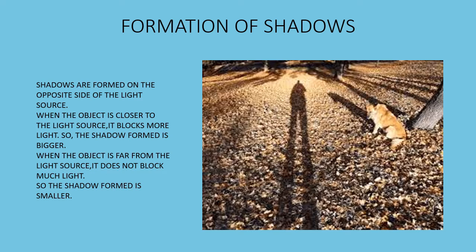Formation of shadows. How are shadows formed? Shadows are always formed on the opposite side of the light source. When the object is closer to the light source, it blocks more light, so the shadow formed is bigger. As you see in the picture, you can observe the big shadow formed. When the object is far from the light source, it does not block much light, so the shadow formed is smaller.